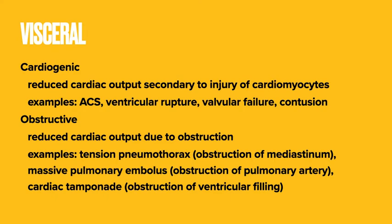Then there's cardiogenic shock, which is a reduction in cardiac output as a result of the heart's inability to pump effectively. This can be because of an ischemic event, papillary muscle rupture, or valvular failure secondary to endocarditis, or a cardiomyocyte contusion. Finally, there's obstructive shock — a reduction in cardiac output due to an obstructive cause, such as tension pneumothorax, massive pulmonary embolus, or cardiac tamponade.